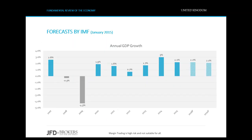In 2015, the economy expanded by 2.2%. According to the IMF, the GDP will continue to advance at an average pace of 2.2% in 2016 and will decelerate slightly to 2.1% in the long-term future of 2020. So, the overall conclusion from the UK GDP is that the economy expands at a healthy pace and with a sufficient rate for the central bank to raise interest rates.